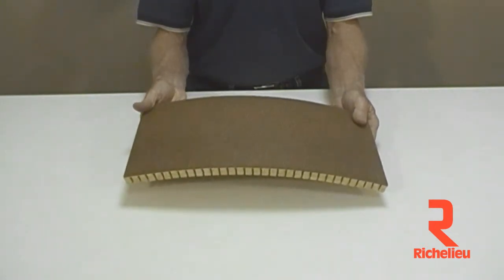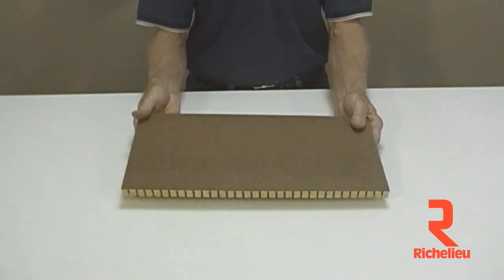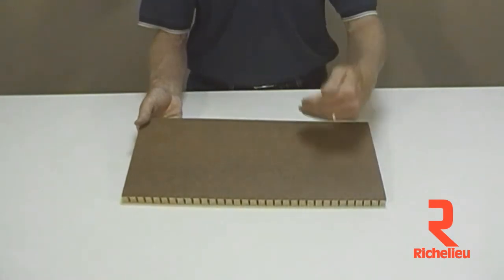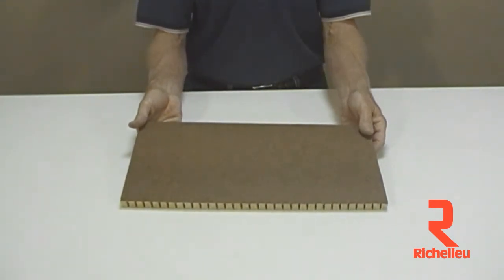In this case, it gives you the ability to create the panels that you may need for your architectural project by either applying the veneer to it and then bending it to make reception desks, curb walls, curb ceilings.